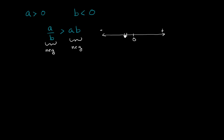We know that a over b has to be negative — it has to be to the left of 0. So a over b is going to be to the right of a times b. One way to think about it is they're both negative, but a over b is going to be less negative.